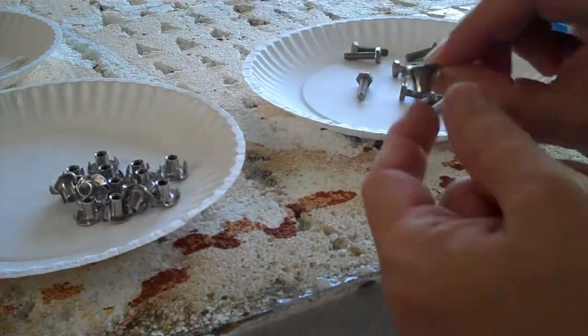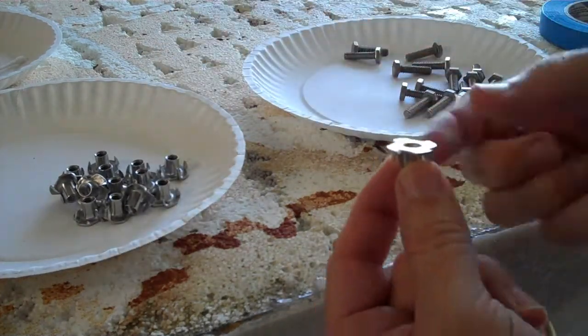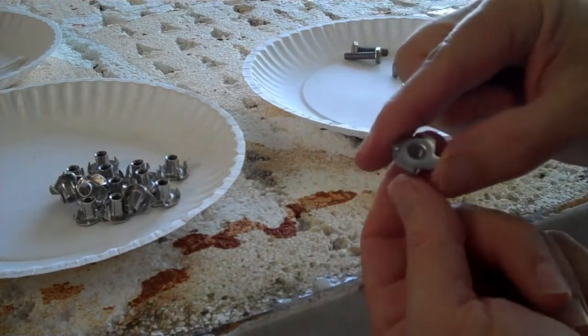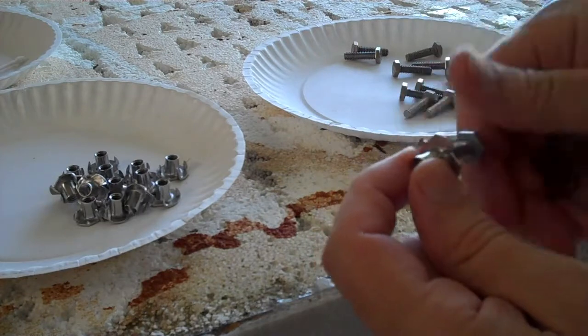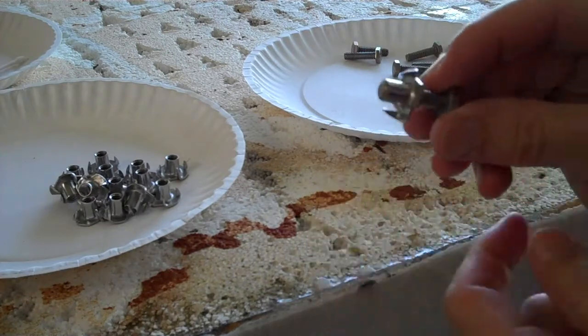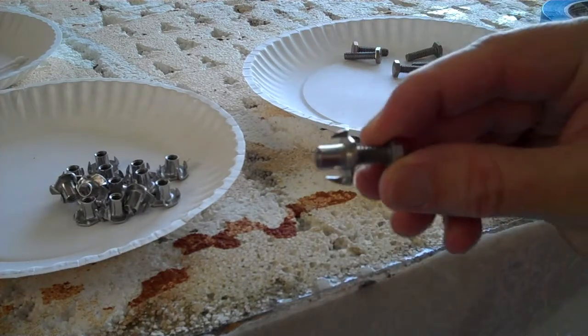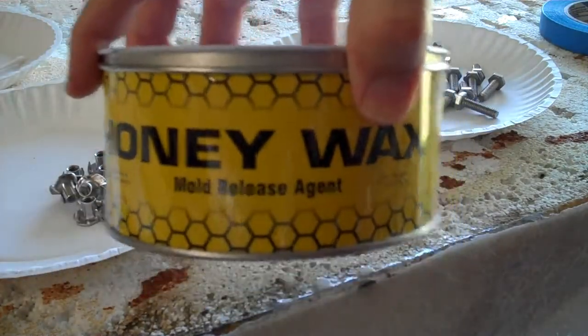I'm getting these T-nuts ready to be embedded into the fiberglass. But we have to protect those threads. We don't want any fiberglass getting into the threading so that these bolts will go in properly. So I'm going to put a bolt inside of there with Honeywax Mold Release Agent on them.